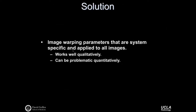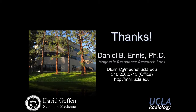The solution is image warping parameters that are system-specific and applied to all images. This works well qualitatively, correcting overall anatomy and geometric fidelity, but could be problematic for more quantitative approaches if care is not taken in how MR signals are handled. That was a brief discussion of several artifacts that occur in MR imaging — there's a rich history of many possible artifacts, but this at least gets you started.